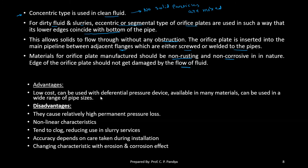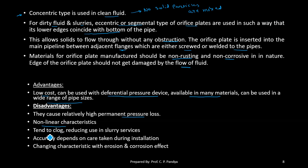Advantages of the orifice plate: low cost, can be used with differential pressure devices, available in many materials, and suitable for a wide range of pipe sizes. Disadvantages: it causes relatively high pressure loss, possesses non-linear pressure-flow measurement characteristics, tends to clog with slurry particles, its accuracy depends on the care taken during installation, and changing characteristics due to erosion and corrosion affect performance.